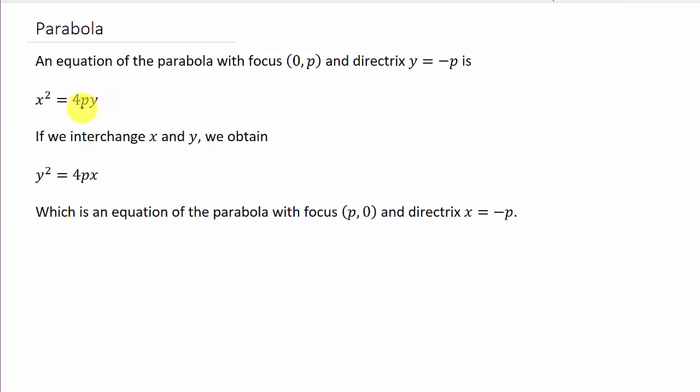that's going to be based on what value p is. And then we have one that's going to open either left or right, y squared equals 4px, see the y is squared, and whether it opens left or right, that's going to depend on p.